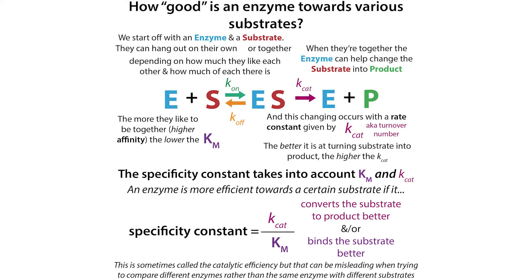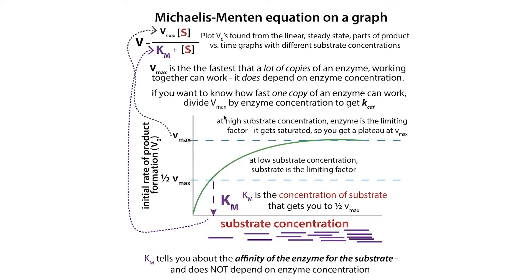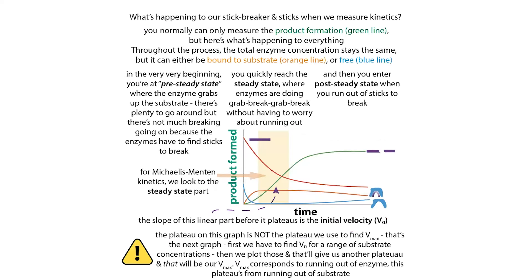For simple reactions, we can take this stick snapper analogy and put it to use. This is a typical type of graph you'll see with Michaelis-Menten kinetics. You have a constant concentration of your enzyme and you're changing the concentration of the substrate, and then you're plotting the initial rate of product formation — the V-naught. Each of these represents a separate experiment, and you're measuring the velocity, which is the rate of product formation over time.